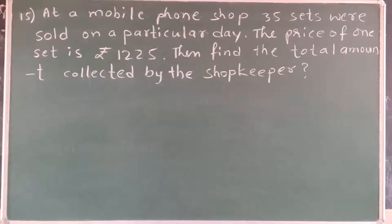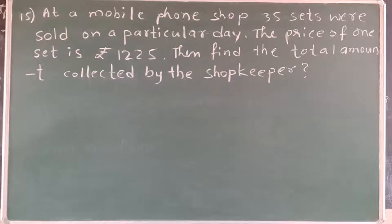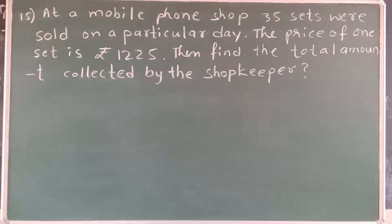15th problem: At a mobile phone shop, 35 sets were sold on a particular day. The price of one set is rupees 1,225. Then find the total amount collected by the shopkeeper on that day. The price of one mobile phone is rupees 1,225. If we multiply by 35 sets, we will get the cost of 35 sets.